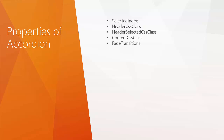We have a property called Fade Transitions. When changing from one accordion pane to another, if you want to provide a fade-in effect, you can set Fade Transition to true or false. You can also specify the transition duration and frames per second. We have a property called AutoSize to specify the size for the accordion. By default, minimum one accordion pane must be expanded. If you don't want that, you can set Required Open Pane to false.